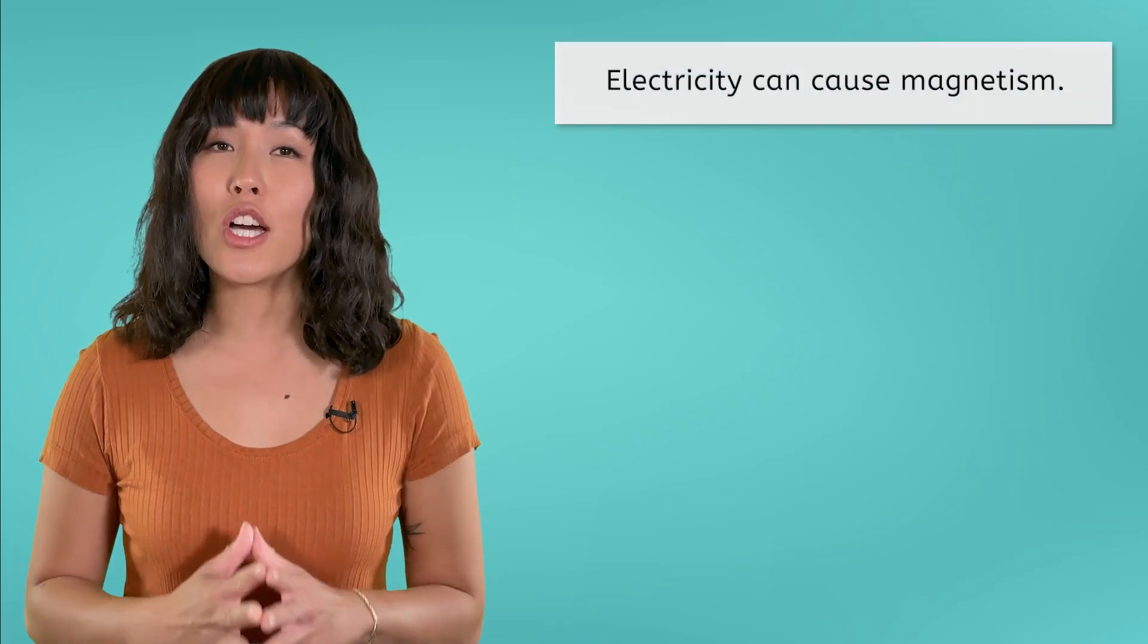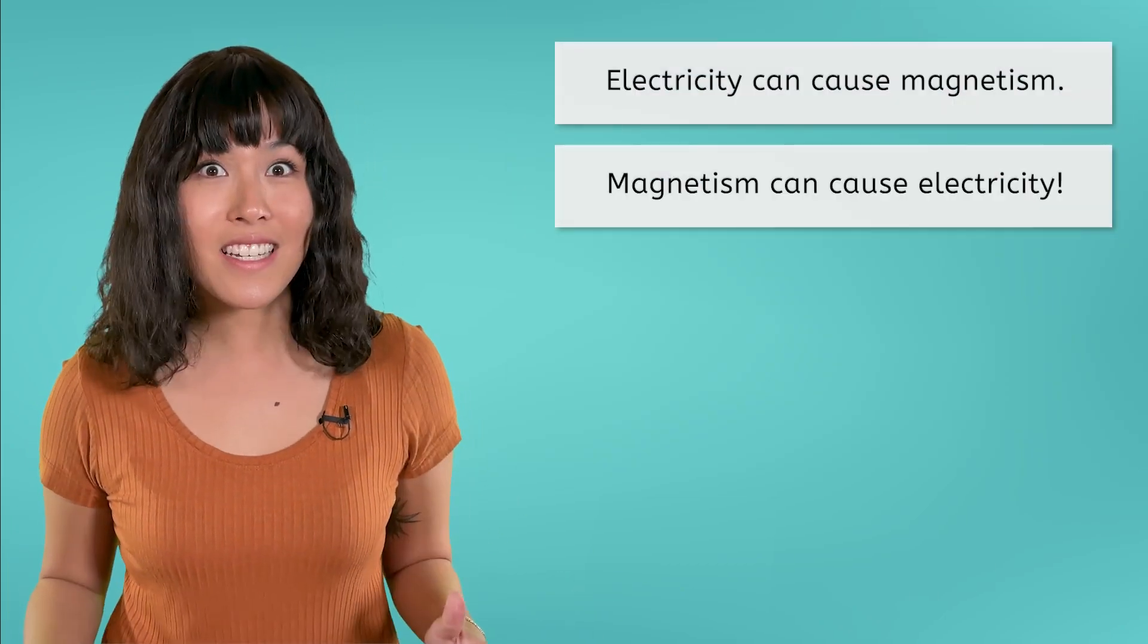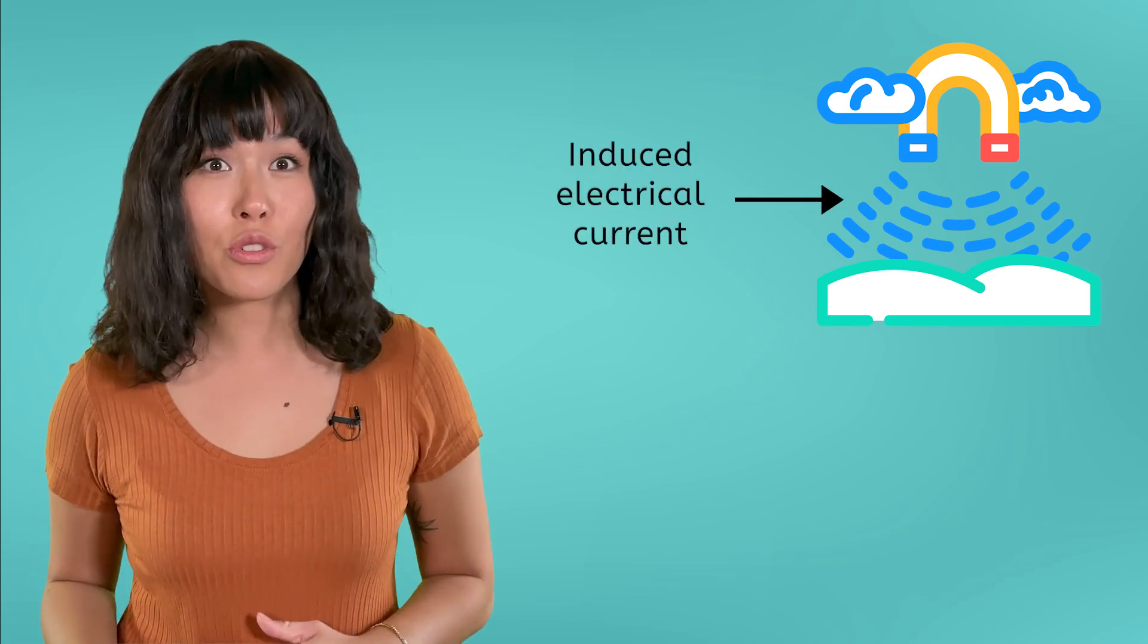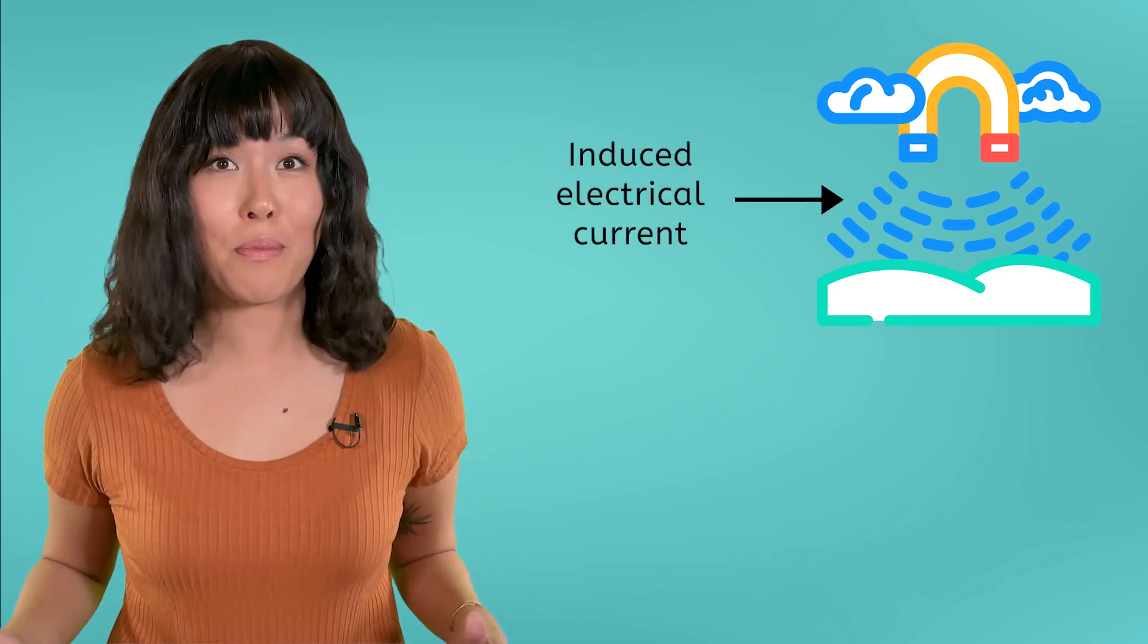Electricity can cause magnetism and magnetism can cause electricity. So the strong magnetic field variations that occur during a geomagnetic storm can induce electrical currents in places that are not prepared for them.